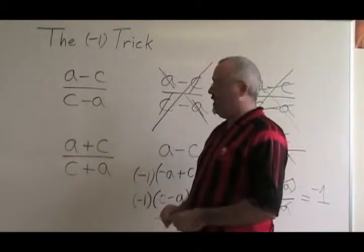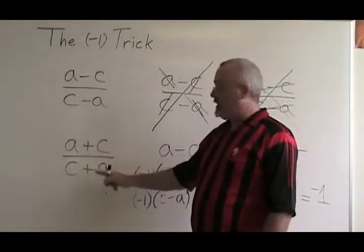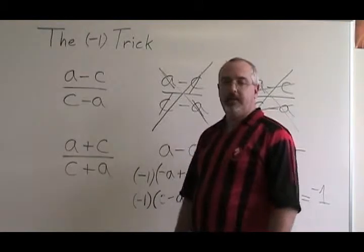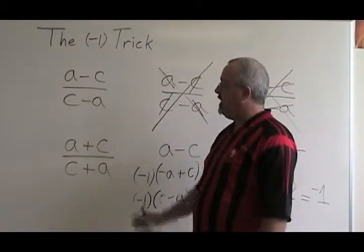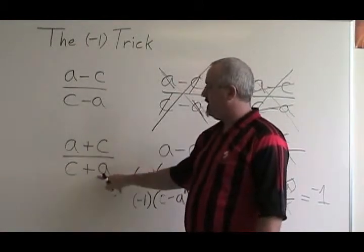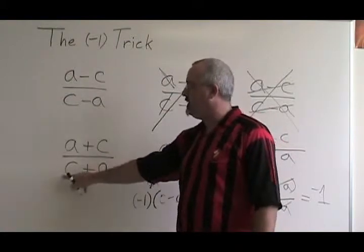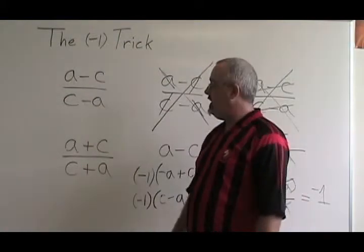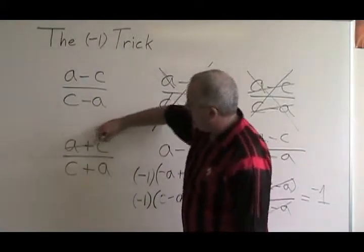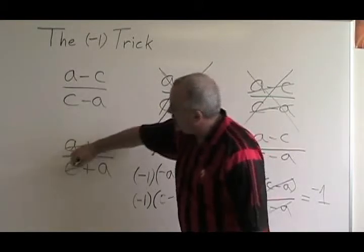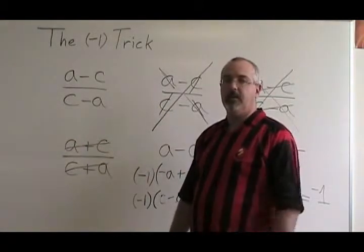One little reminder: if it's a plus sign instead of a minus sign, a plus c is the same as c plus a. The a is positive in both, and the c is positive in both, so a plus c equals c plus a. We are allowed to cancel the binomials when they're written backwards if it's a plus sign.